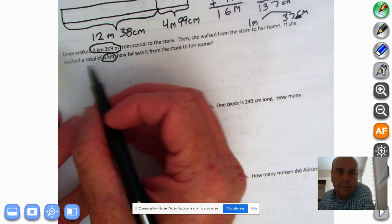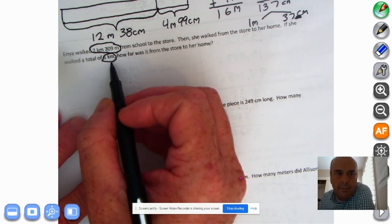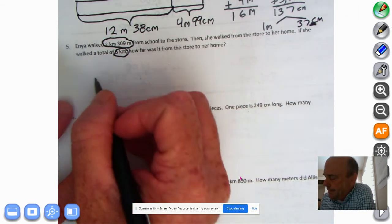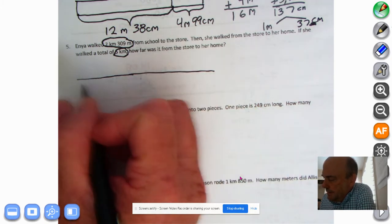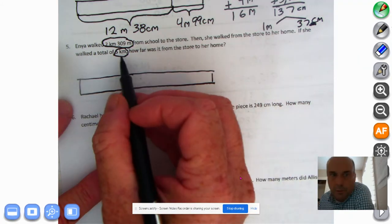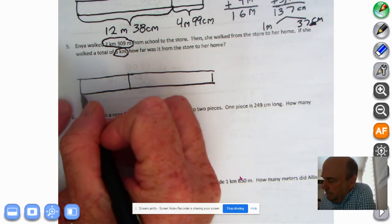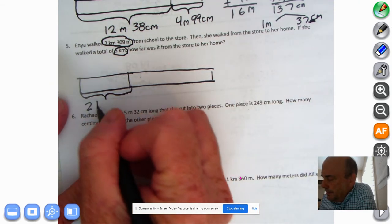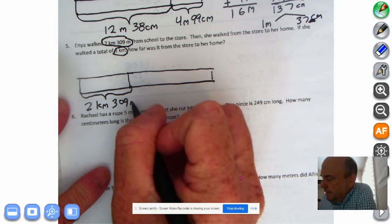This is quite a problem. So she starts off walking 2 kilometers, 309 meters to get to the store. Then she walks to her house. So time for the tape diagram. There we go. So the first part of her trip is 2 kilometers, 309 meters.